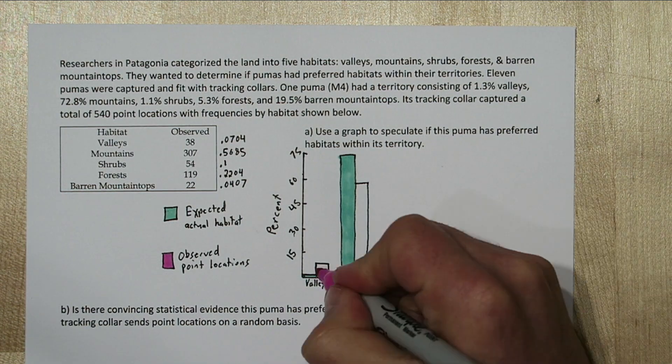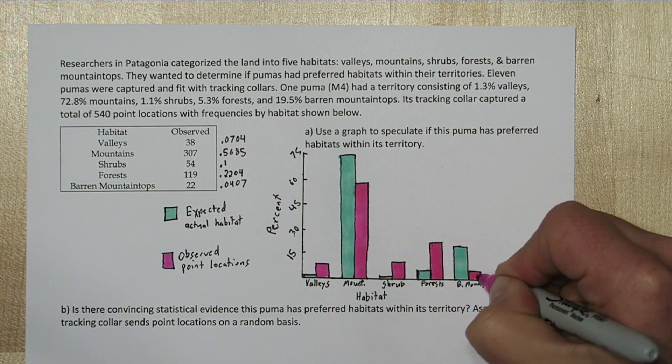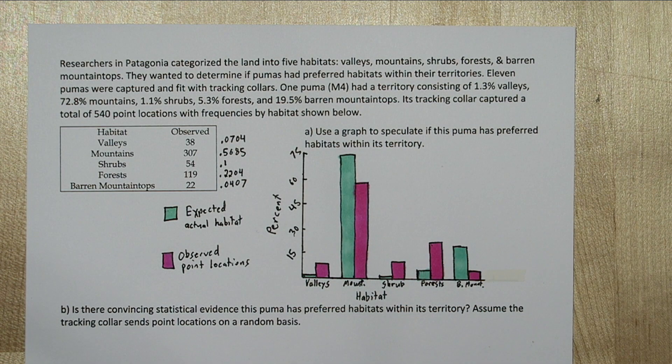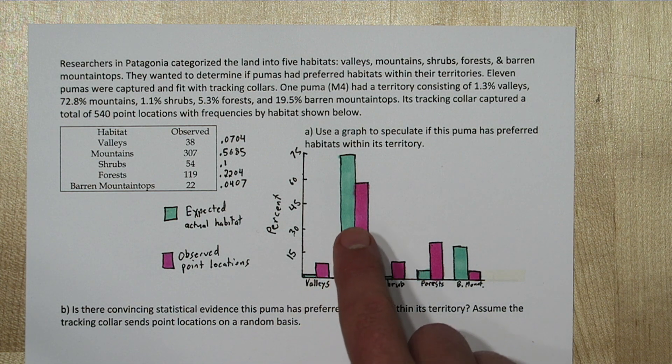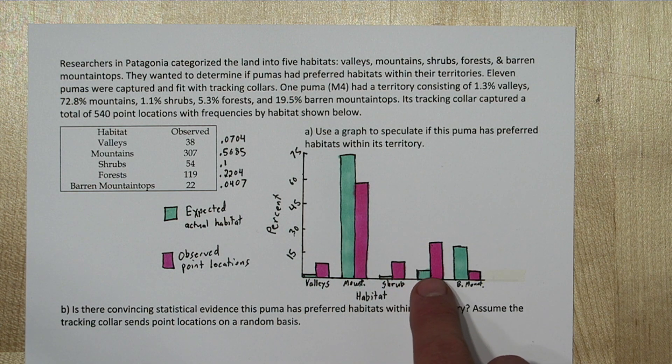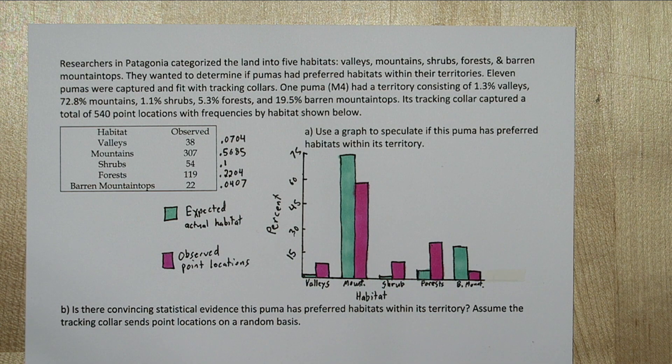So let's color this all in. Now if the puma didn't have a preferred habitat, and it just randomly walked around its entire territory, we'd expect all of these different bars to be close to the same height. But that's not what we see. We see some differences there. However,